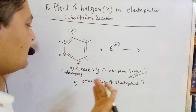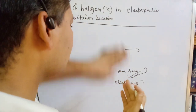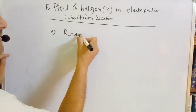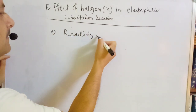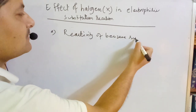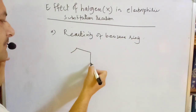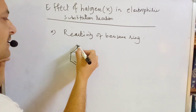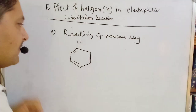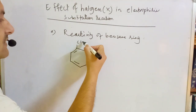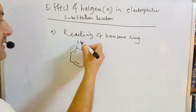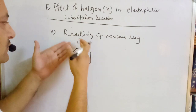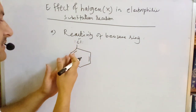We will explain the reactivity of the benzene ring. We will explain chlorobenzene and how we can analyze it. Chlorobenzene contains a carbon-chlorine bond.